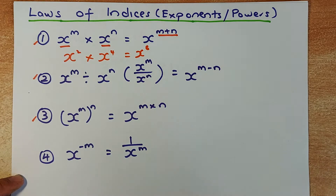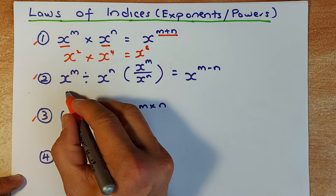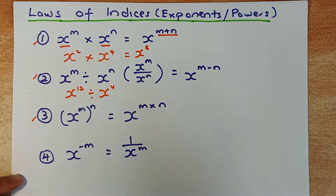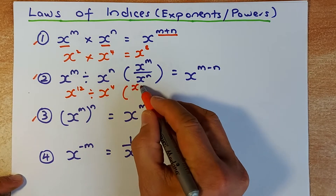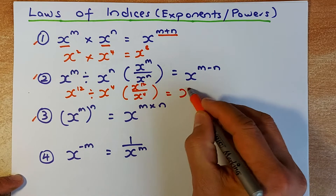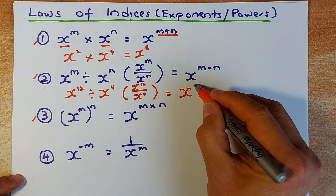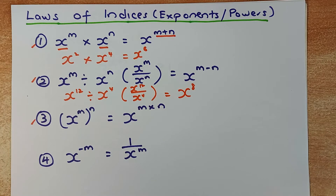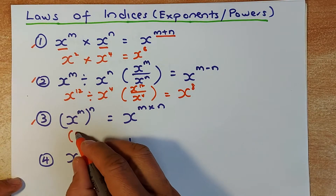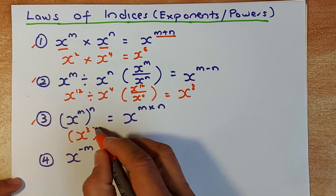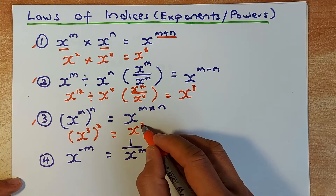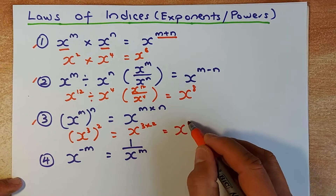Similarly, if you divide: X to the power of M divided by X to the power of N. For example, X to the power of 12 divided by X to the power of 4 — you subtract the powers. So 12 minus 4 gives you X to the power of 8. The third law, more useful in Level 2: X to the power of M, then raised to the power of N. For example, X cubed to the power of 2 — you multiply the powers, so 3 times 2 gives you X to the power of 6.